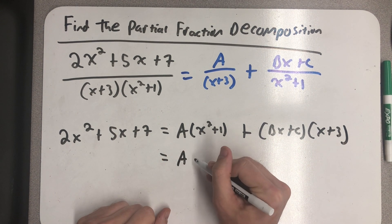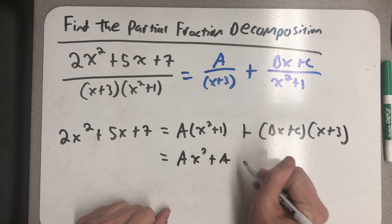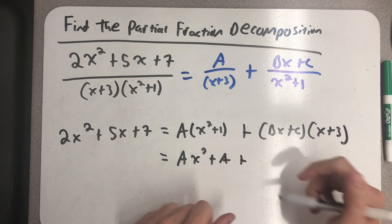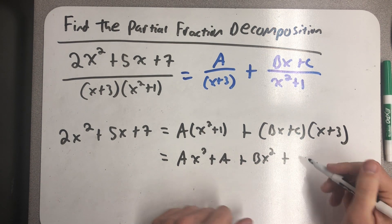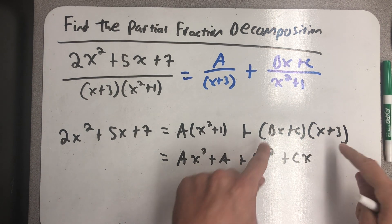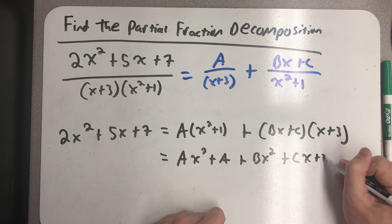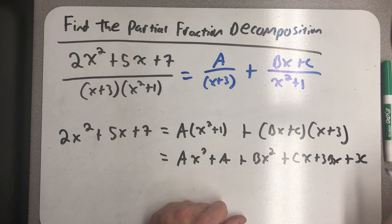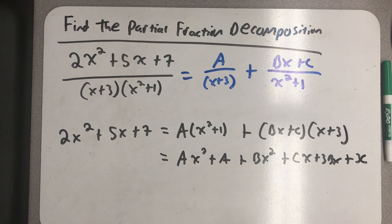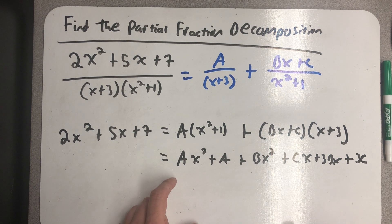Distributing on this side, I have ax squared plus a plus bx squared plus cx plus 3bx plus 3c. And now, I can imagine combining the like terms.